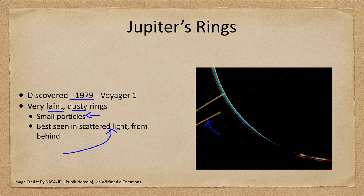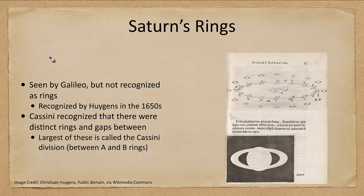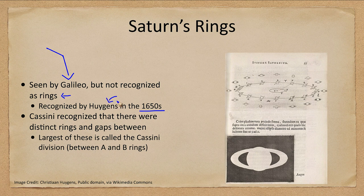As we will see, rings come and go, so it's possible that Jupiter had a nicer ring system in the past and may have one in the future. Saturn's rings were seen by Galileo, but were not actually recognized as rings at the time. It was not until the 1650s, a few decades later, that Christiaan Huygens recognized these as rings. We can see his drawings of Saturn orbiting with the rings tilted.